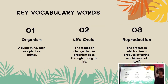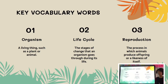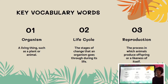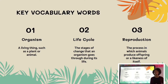Before we dive deep into the lesson, we are going to cover a few vocabulary words. The first word is organism — a living thing such as a plant or animal. The second word is life cycle — the stages of change that an organism goes through during its life. The third word is reproduction — the process in which animals produce offspring or a likeness of itself.